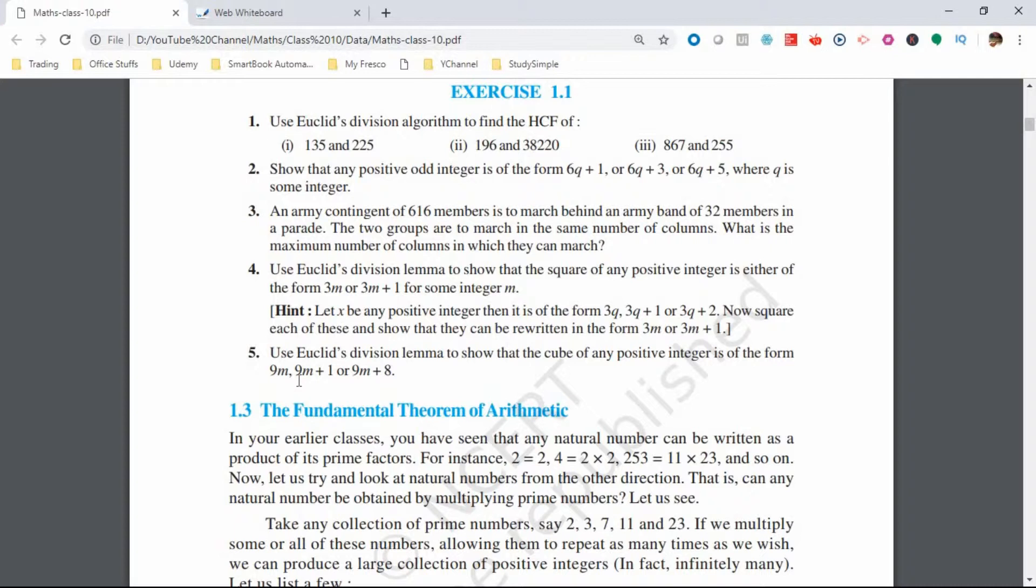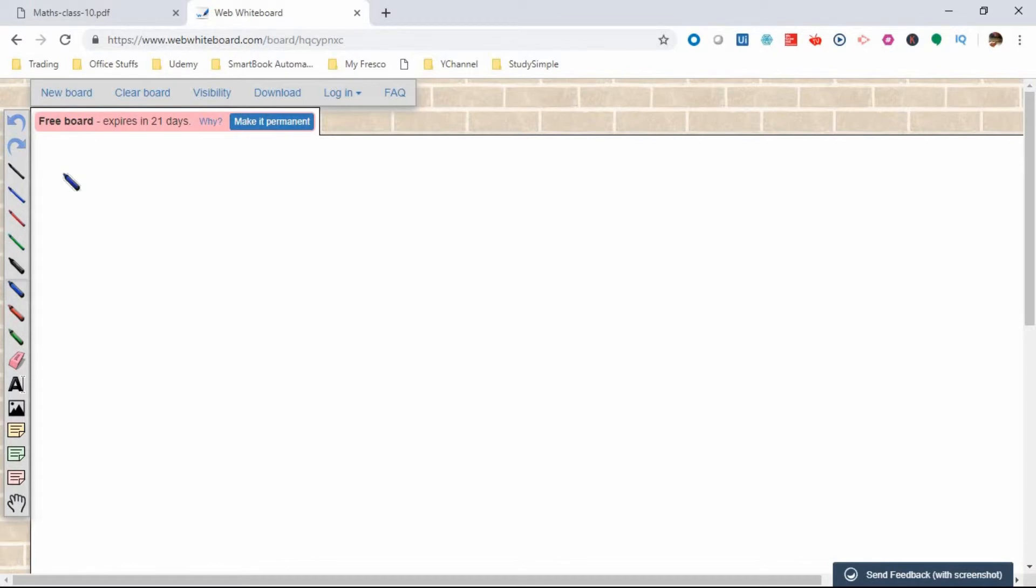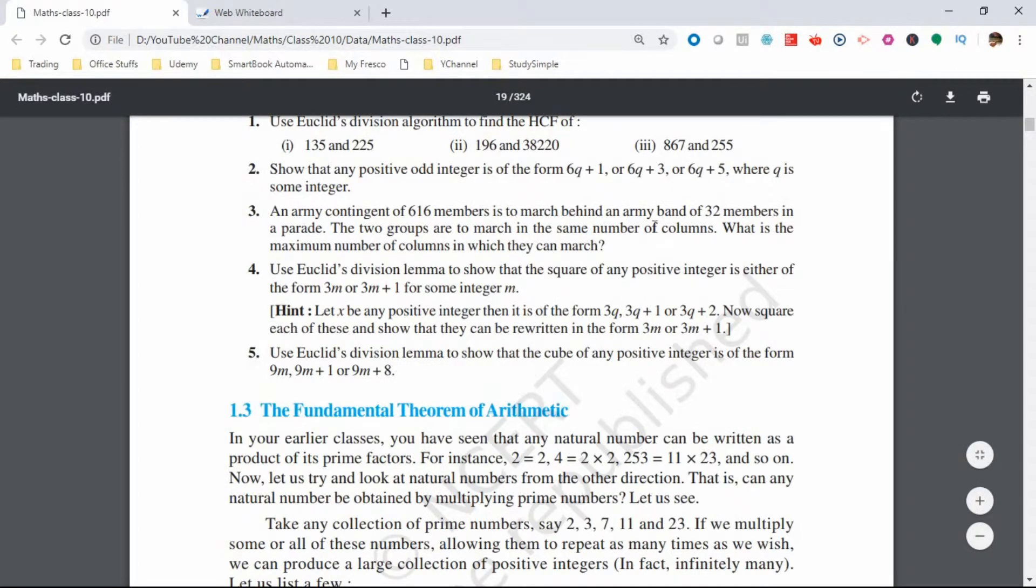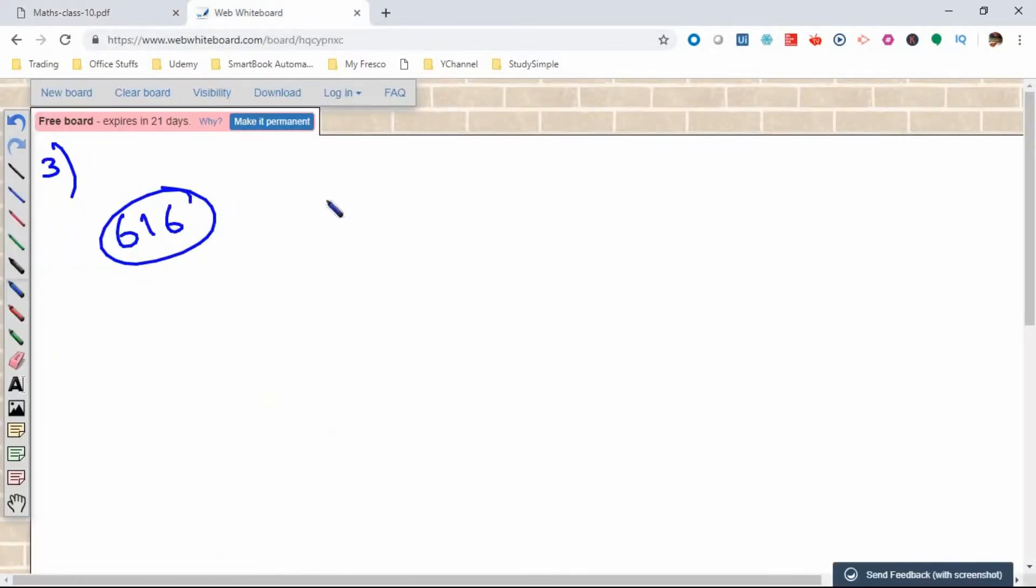Question number 3 says an army contingent of 616 members is to march behind an army band of 32 members in a parade. The question asks for the maximum columns that can be made. For maximum columns, we have to find the HCF using Euclid's algorithm.